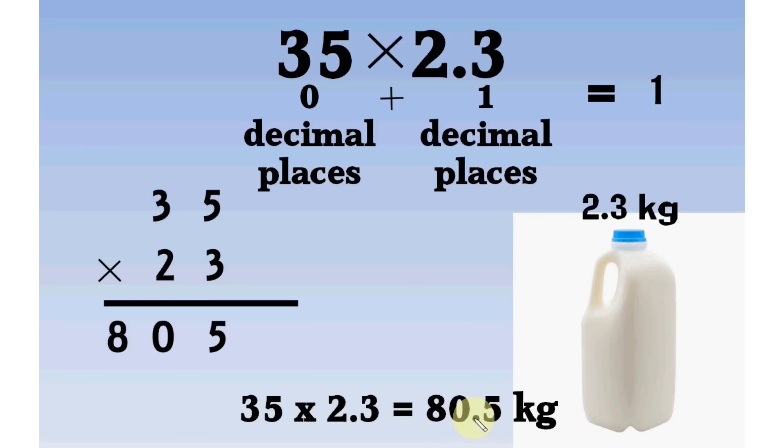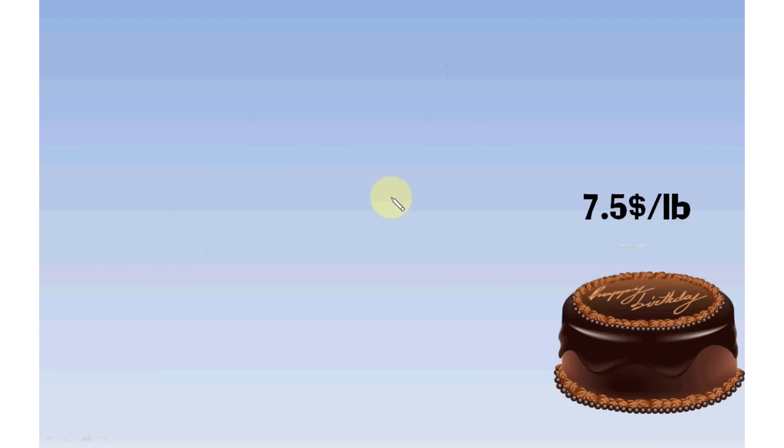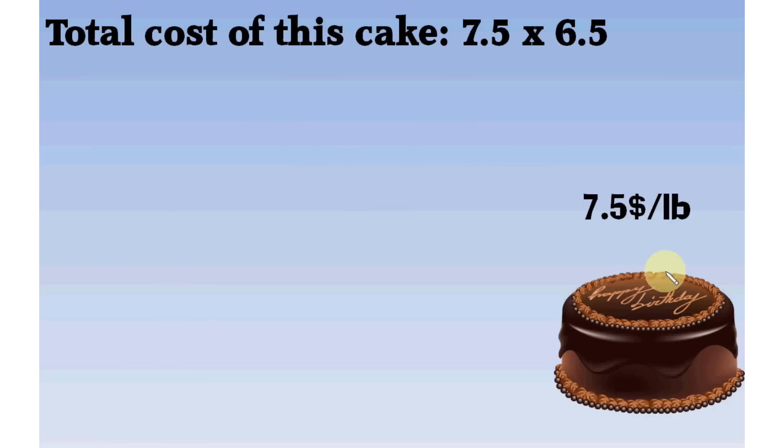Now, let's multiply a decimal number by another decimal number. Say, price of 1 pound of this chocolate cake is $7.5. Weight of this whole cake is 6.5 pound. What is the price of this whole cake?